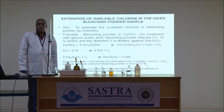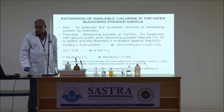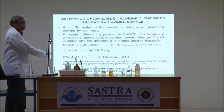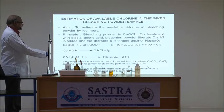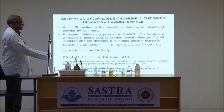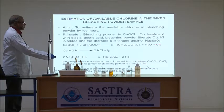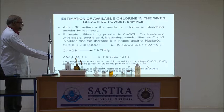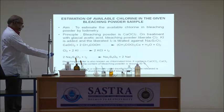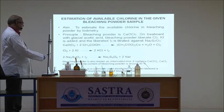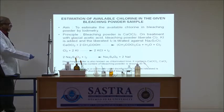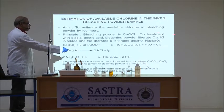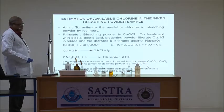The reactions that occur are given here. Bleaching water reacts with acetic acid, liberating chlorine. Chlorine reacts with potassium iodide, liberating iodine. The liberated iodine is titrated against sodium thiosulfate. By knowing the volume of sodium thiosulfate solution, we can calculate the amount of chlorine released from the bleaching water.